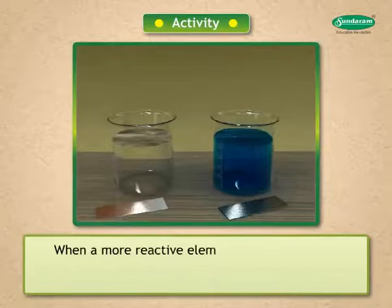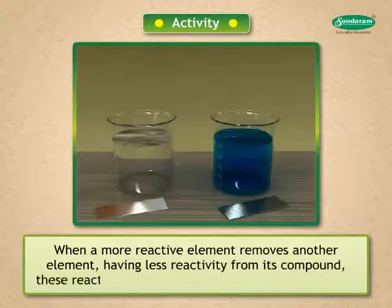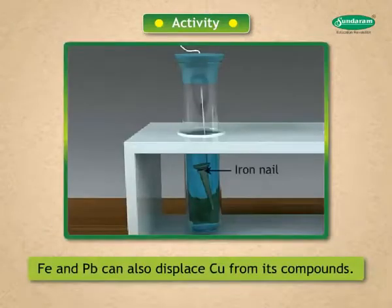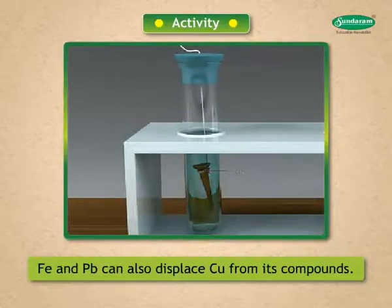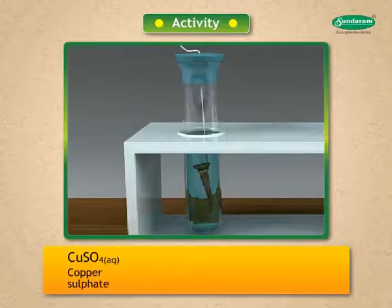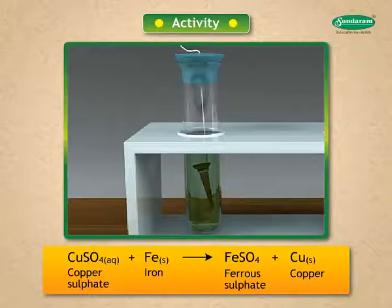When a more reactive element removes another element having less reactivity from its compound, these reactions are termed as displacement reactions. It is also observed that iron and lead can also displace copper from its compounds. Complete the reaction and name the products: CuSO₄(aq) + Fe(s) → FeSO₄ + Cu.